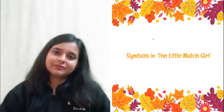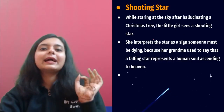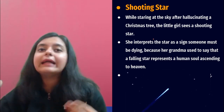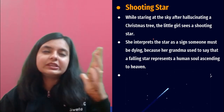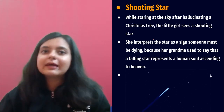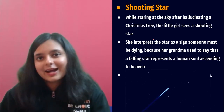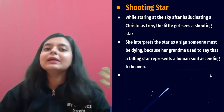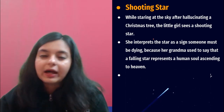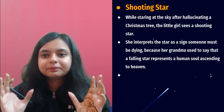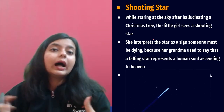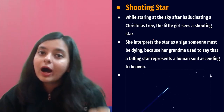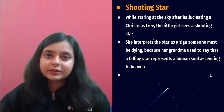Now we will talk about symbols. The very prominent one is the shooting star. The shooting star is a symbol of somebody dying, but there is also another meaning — when we see a shooting star, we say our wish will be granted. In the case of the little girl, the shooting star did grant her wish, and she went to her grandmother who loved her the most. She didn't want to lose the vision of her grandmother, so she was sent to her grandmother, and that is how this wish was fulfilled.